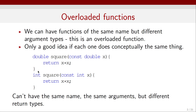We can have functions of the same name but different argument types. This type of function is called an overloaded function, and it's only a good idea if each one of those functions does conceptually the same thing. For example, here I define a function called square that computes the square of a number, and we have two copies of this function. This is a reasonable use of overloading.